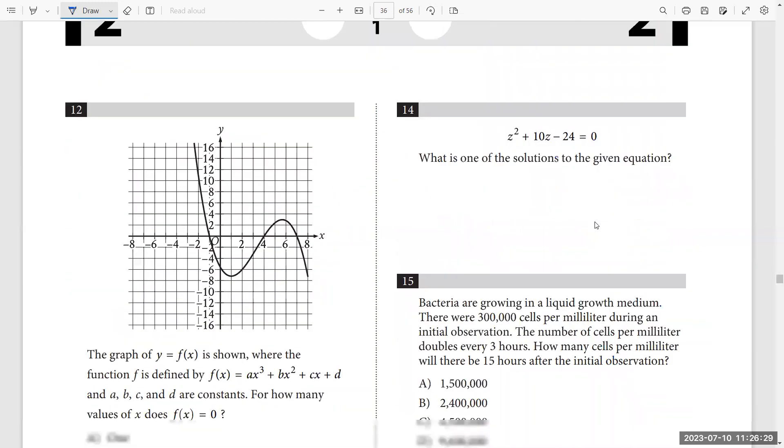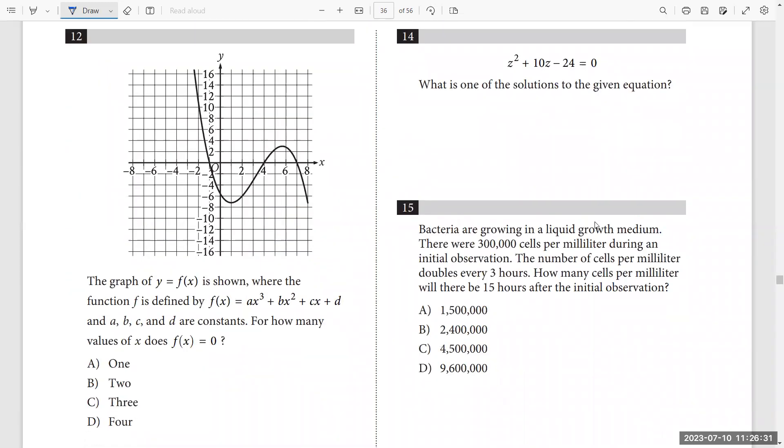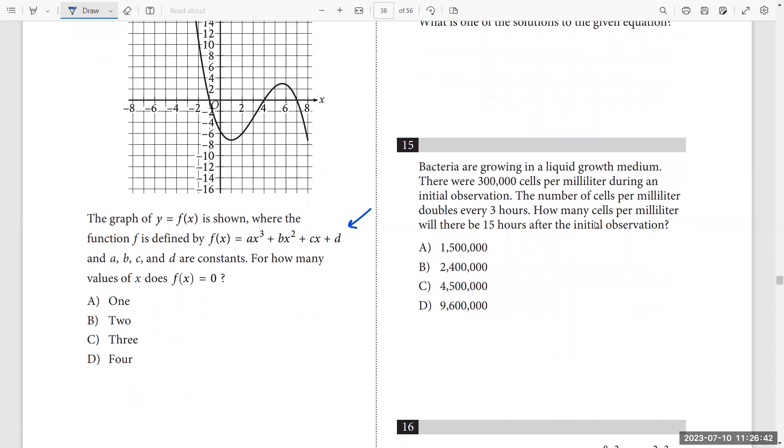Question number 12. This is a cubic function. The graph y equal to f of x is shown where the function is defined by this form, cubic function. And a, b, and c are constant. For how many values of x does f of x equal to 0? Any function equal to 0 at the point of intersection with x axis. So I have three points of intersection. So I have three solutions for this equation.